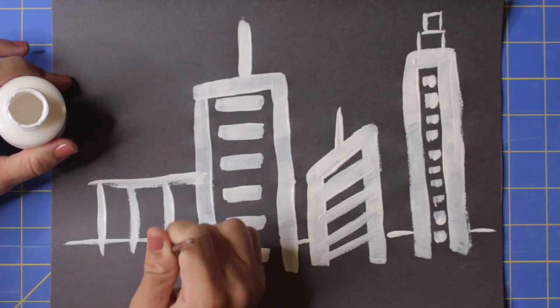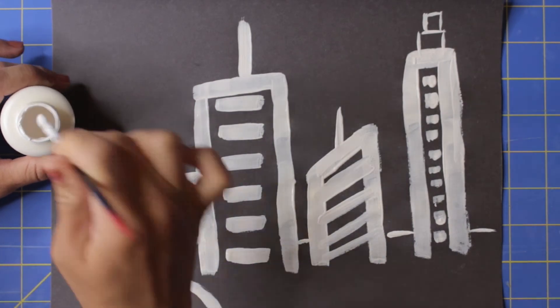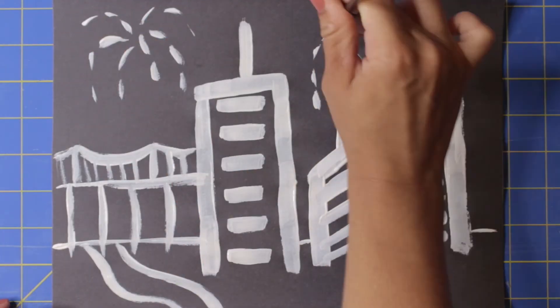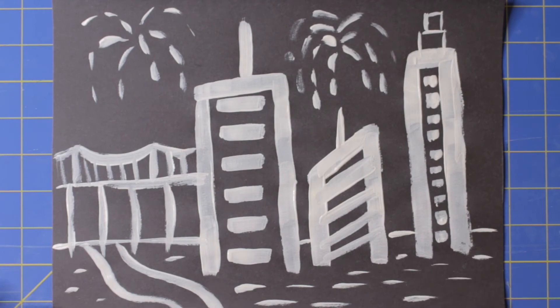If you find your brush is having difficulty painting a smooth line, try adding a titch more paint. That normally will help your brush glide a little easier.